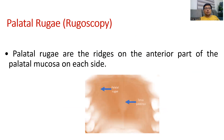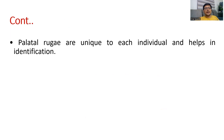Palatal rugae or rugoscopy — palatal rugae are the ridges on the anterior part of the palatal mucosa on each side. Palatal mucosa के anterior part में दोनों side जो folds होते हैं, जो wrinkles और ridges रहती हैं, उसको palatal rugae बोलते हैं. Palatal rugae are unique to each individual and help in identification.